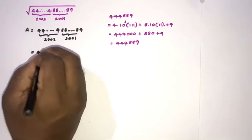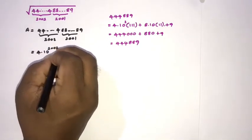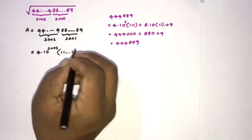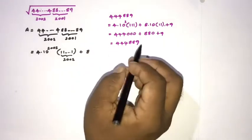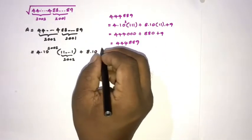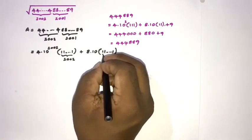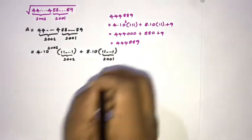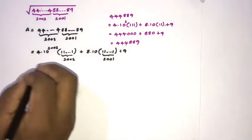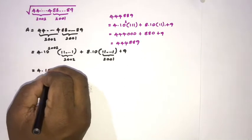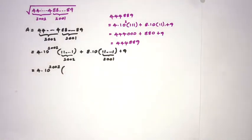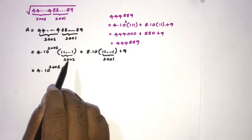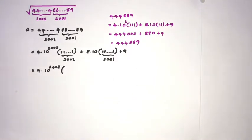According to this pattern, we can express our number A as: 4 times 10 raised to the 2002 power times the repunit with 2002 ones, plus 8 times 10 times the repunit with 2001 ones, plus 9. We need to express the repunit (1 repeated 2002 times) as a sum of powers of 10.